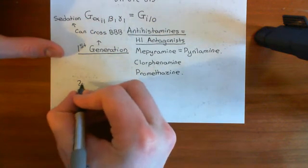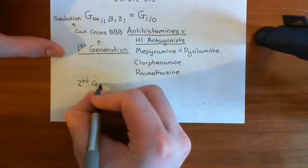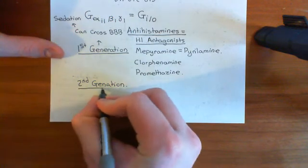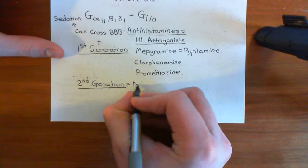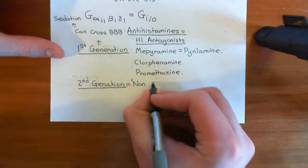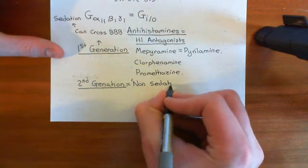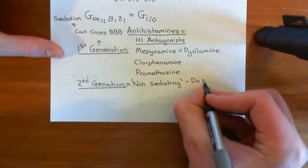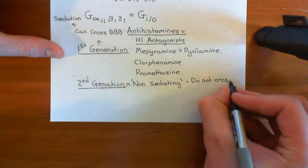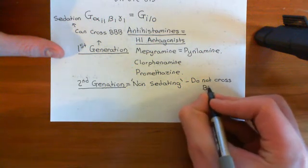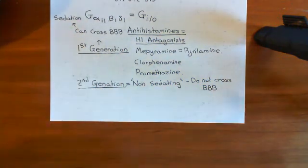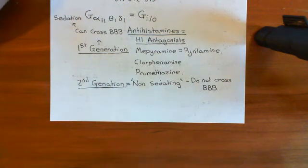Let's move on to the second generation antihistamines. Second generation antihistamines are also called non-sedating antihistamines, and they're called that because they do not cross the blood-brain barrier. That's the key difference from the first generation ones. They cannot cross the blood-brain barrier, and therefore they do not cause sedation — because if they can't cross the blood-brain barrier, they can't interact with neurons, so they don't have any effect on the brain, at least not in principle.